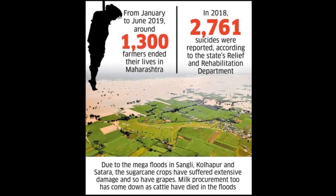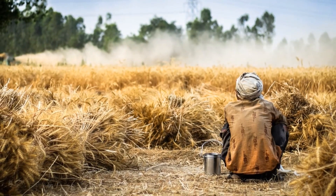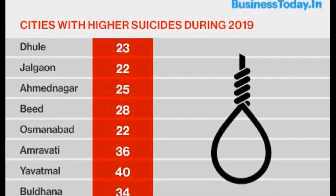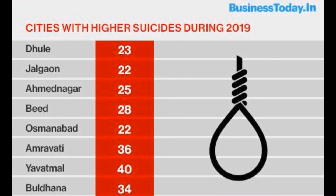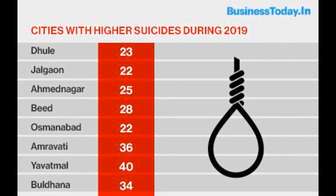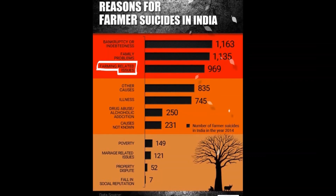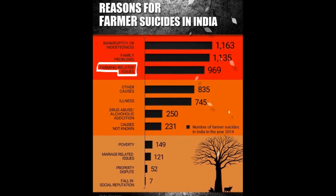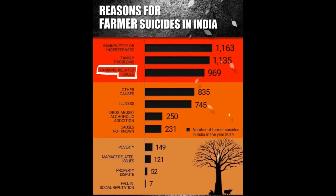As of 2019, in Maharashtra alone, more than 60,000 suicides have taken place, with an average of 160 suicides every day. Unfortunately, farming issues such as weeds were considered the top reason.